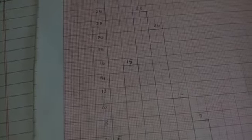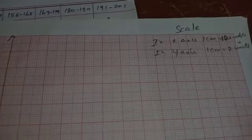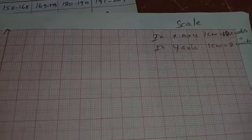The frequencies are 5, 15, 23, 20, 10, and 7. First, in the graph, we write the scale. On the x-axis we take 1 centimeter equal to 10 units, and on the y-axis we take 1 centimeter equal to 2 units.